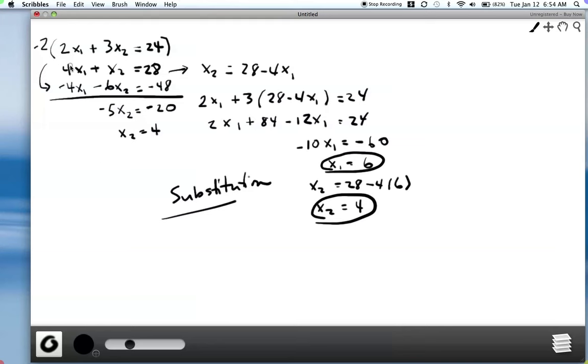And then to get x1, I can substitute that back into either of these equations. And we already know that x1 is 6, so I won't go through that process. So there we go. We have our solution, and that's using a method of elimination. Systematically eliminate variables. So those are the two methods that you probably learned back in algebra class for solving the system.